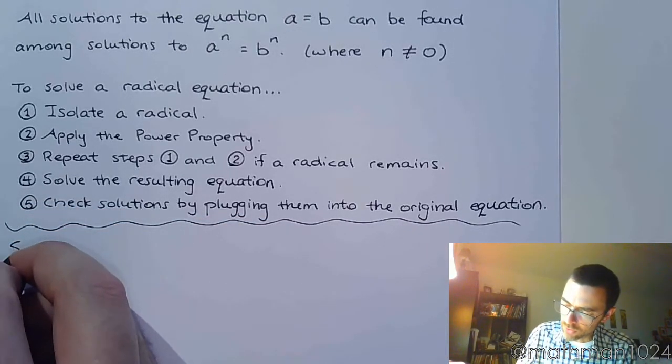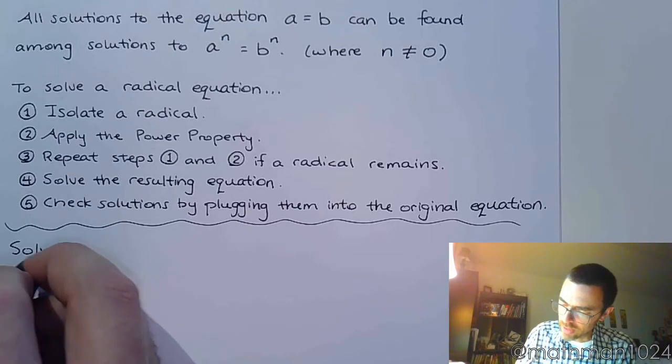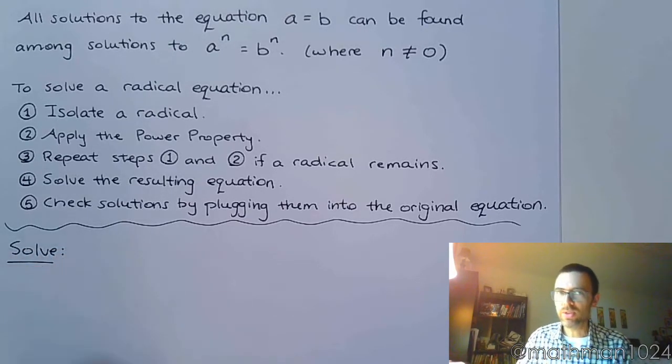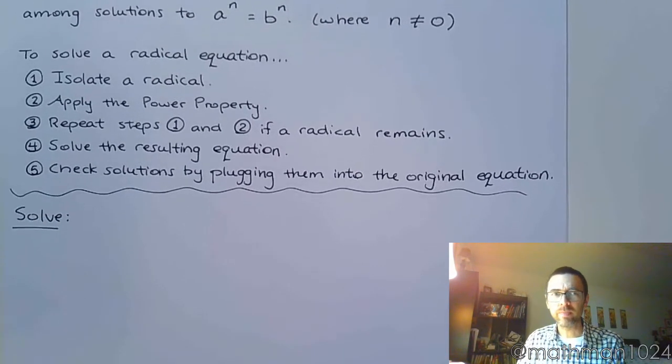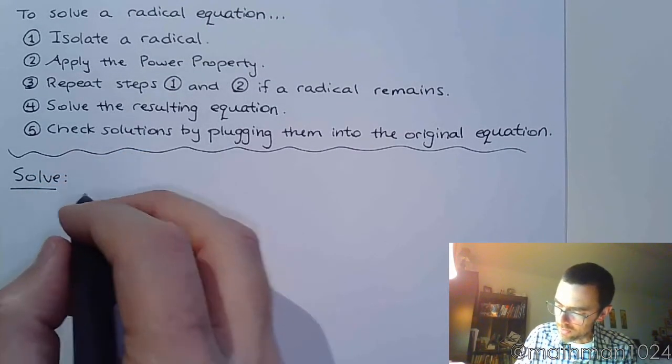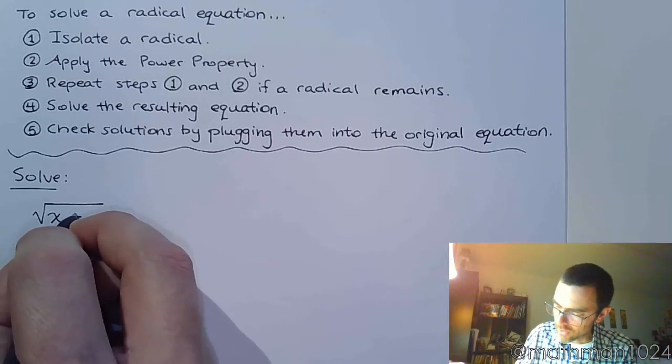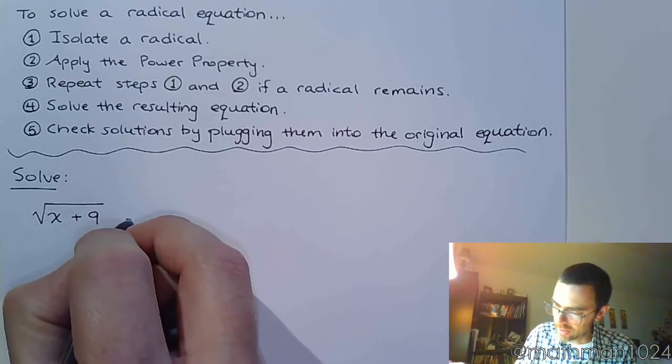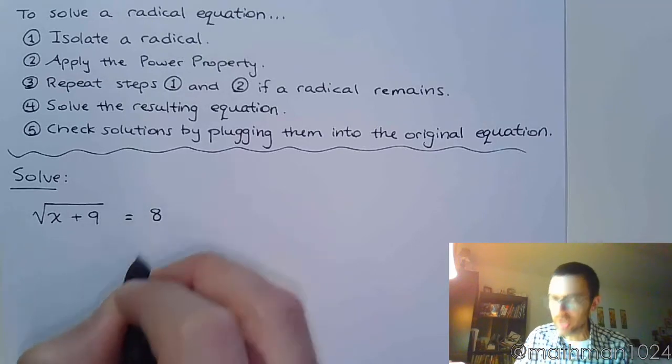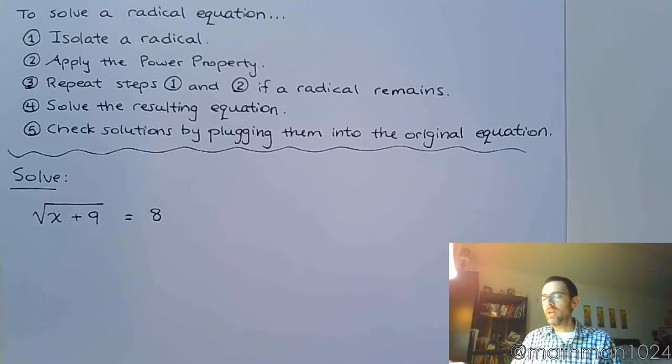All right, so we're going to run through a couple of quick examples so that you can see that for the most part these equations are not that bad. The first one we have: the square root of x plus 9 equals 8. Step 1 says to isolate a radical, and we've already done that.